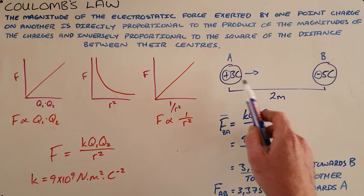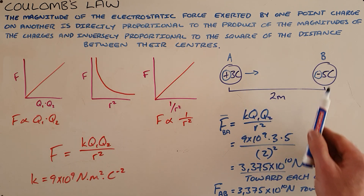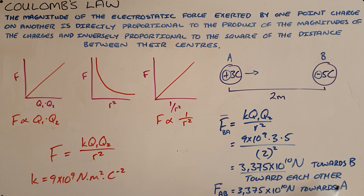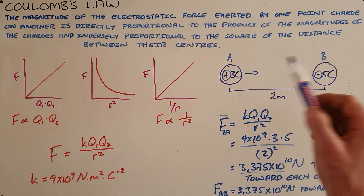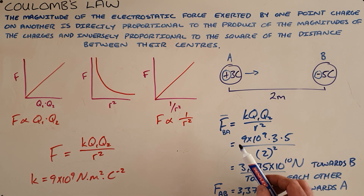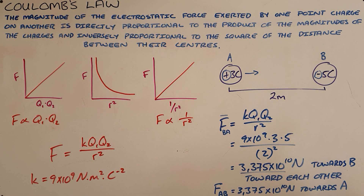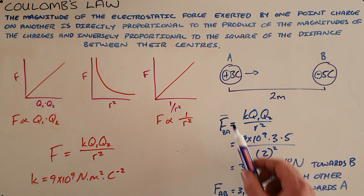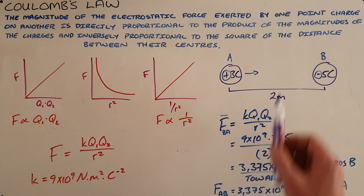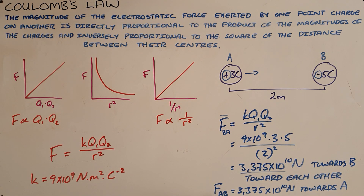If the question asks for the force between the two objects, it would be either toward each other or away from each other. If the question asks what force B is exerting on A, we would say the force is towards B or away from B. And if the question asks what force A exerts on B, we would state it is either towards A or away from A.